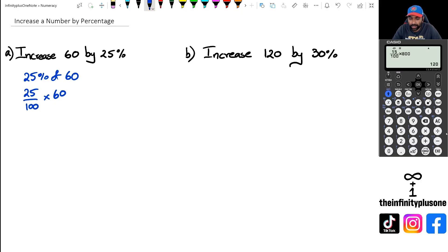So we're going to find out 25% of 60. That is 25 over 100, so 25 over 100 multiplied by 60, and that's going to give me 15.